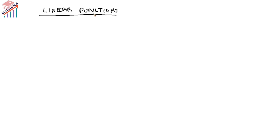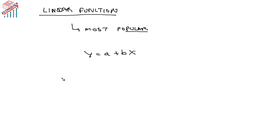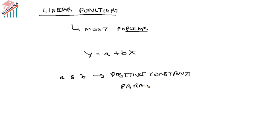The linear function is a widely used mathematical form and the most popular among economists. In this function, it can be stated with positive constants: y = f(x), where a and b are positive constants. These are called parameters — parameters of the function are variables that are fixed and given in the specific function. Whenever certain numbers are assigned, they are fixed for that particular function.